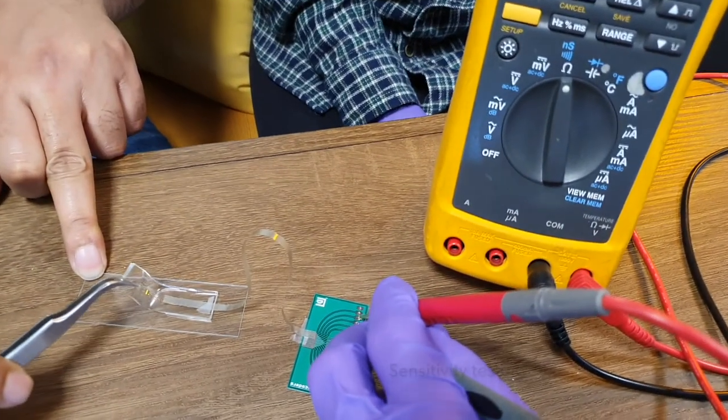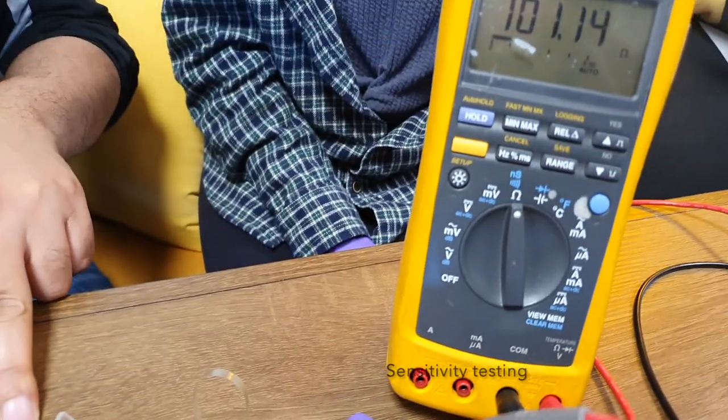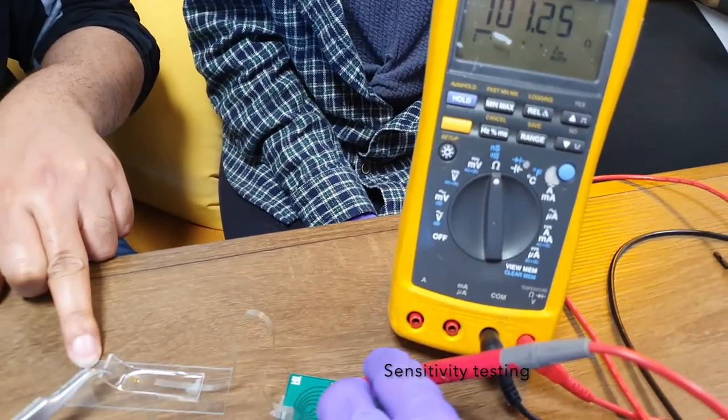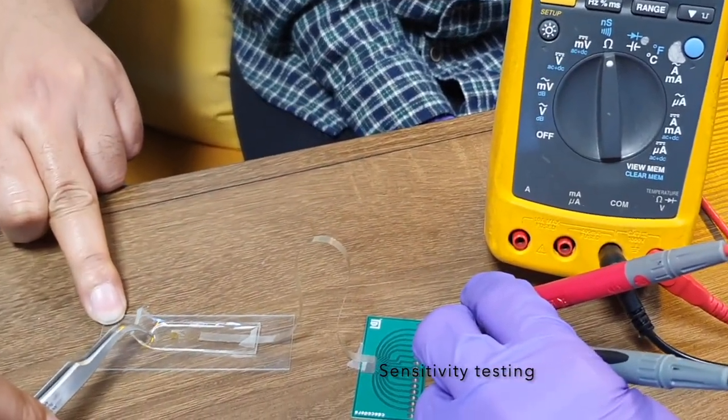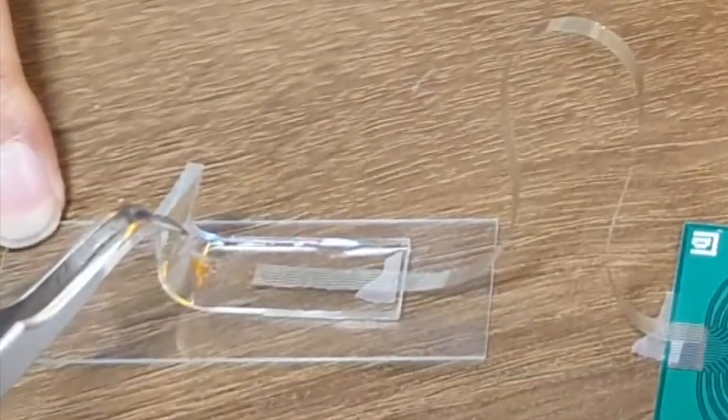We then characterize the strain sensor response to a bending motion using a multimeter. Voila! Our sensor is ready!